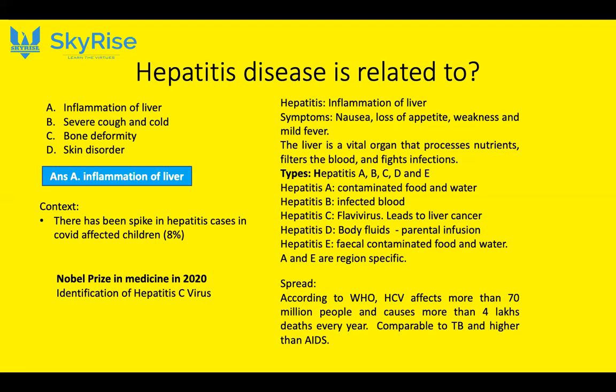Now let's see the types of hepatitis. There are five types: A, B, C, D and E. Hepatitis A spreads through contaminated food and water. Hepatitis B through infected blood. Hepatitis C is a flavivirus and is very severe — it is not easy to cure, has no discovered medicine, and also causes liver cancer.